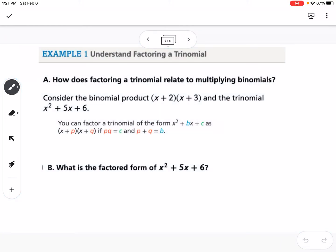So the first thing is how do we factor a trinomial, and how does the factors relate to multiplying binomials? What we have done is we have looked at x plus 2 times x plus 3, and we've either used a table or FOIL. So x times x is x squared, x times 3 is 3x, 2 times x is 2x, and 2 times 3 is 6. So we get x squared plus 5x plus 6.